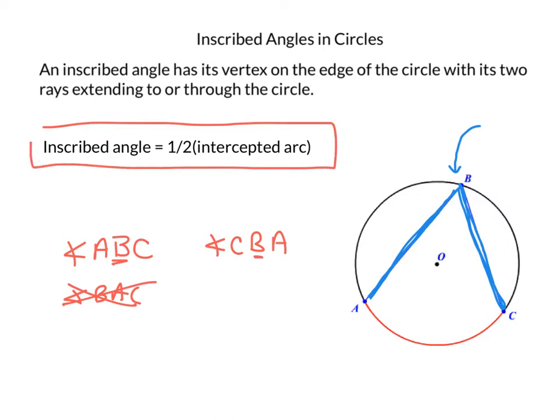If you look at the formula here, an inscribed angle, the measure of that has to equal half the intercepted arc. Again, math sometimes really likes to use scary words that sound intimidating. What is an intercepted arc? It just means when the angle comes out, it hits the circle in two places, and the arc in between it is the intercepted arc.